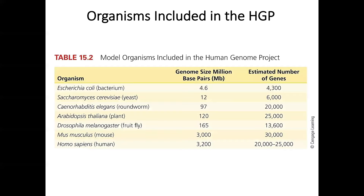This table shows the model organisms included in the Human Genome Project, including mouse, Drosophila, Arabidopsis, C. elegans, yeast, and E. coli bacteria. The sequence information of all these organisms is now available for public use. We also looked at how to access human genome data, such as version HG19, using a software called IGV, which can directly link to available genetic information.